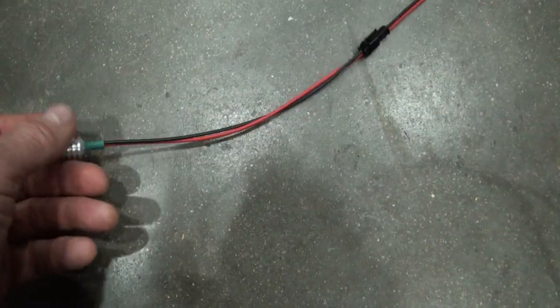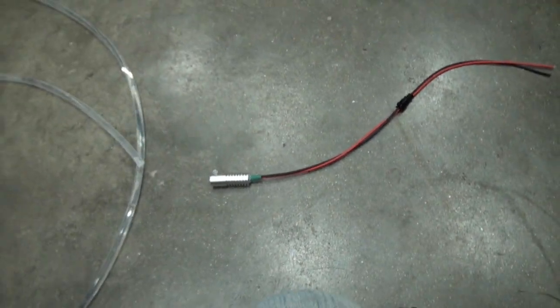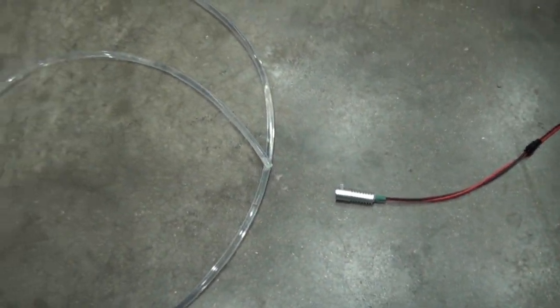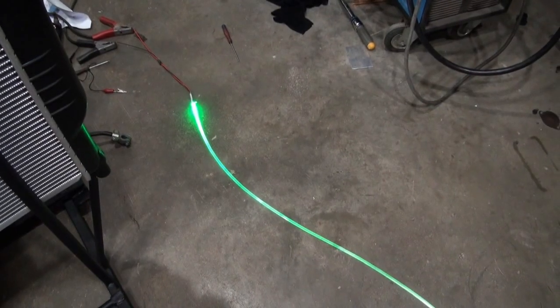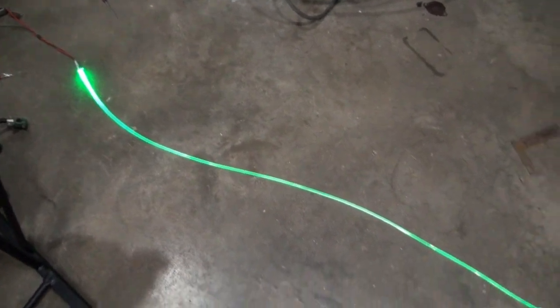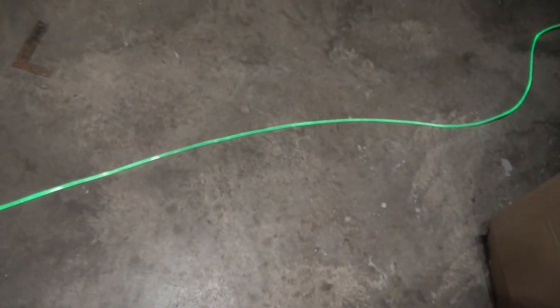I'm going to hook this up to the battery charger. This is 12 volt, and then show how this looks in the dark here. Even with some lights turned on in here, it is evident that this fiber optic cable is being illuminated.